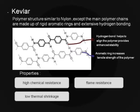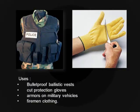Kevlar polymer has a structure similar to nylon, except the main polymer chains are made up of rigid aromatic rings with extensive hydrogen bonding. The hydrogen bonds help enhance the stability of the polymer, while the aromatic rings increase the tensile strength. Kevlar is used in cut protection gloves, bulletproof vests, and fireman clothing.